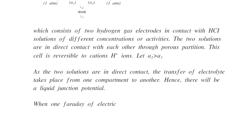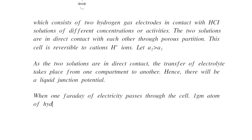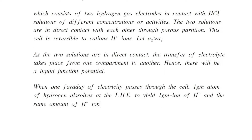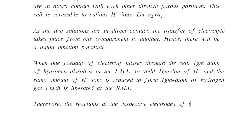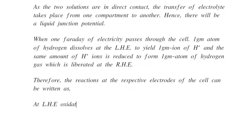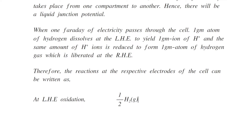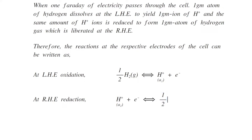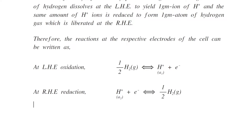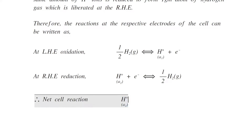When 1 faraday of electricity passes through the cell, 1 gram atom of hydrogen dissolves at the left-hand electrode to yield 1 gram ion of hydrogen, and the same amount of hydrogen ions is reduced to form 1 gram atom of hydrogen gas liberated at the right-hand electrode. At the left-hand electrode, oxidation takes place: half H₂ gas is converted into H⁺ ions of activity A1 and electrons are liberated. At the right-hand electrode, reduction takes place: H⁺ ions of activity A2 combine with the electron to form half H₂ gas. The net cell reaction is H⁺ ions of activity A2 converted into H⁺ ions of activity A1. This is equation number 1.